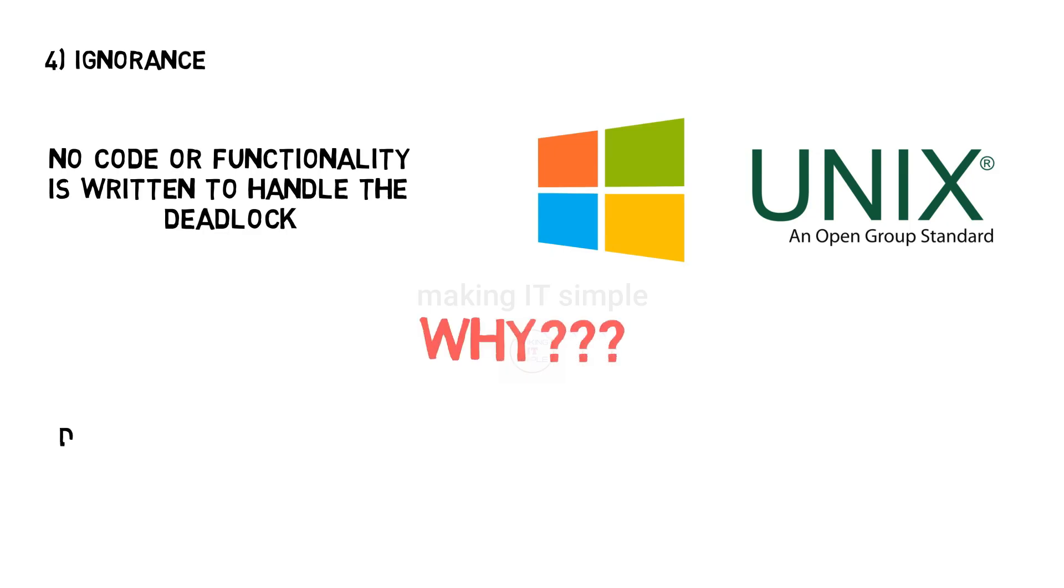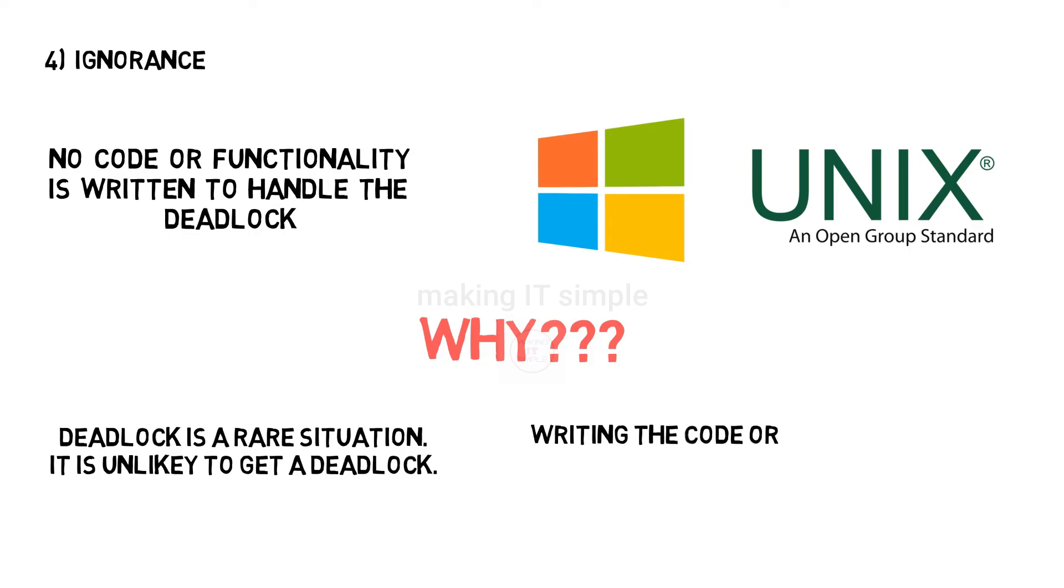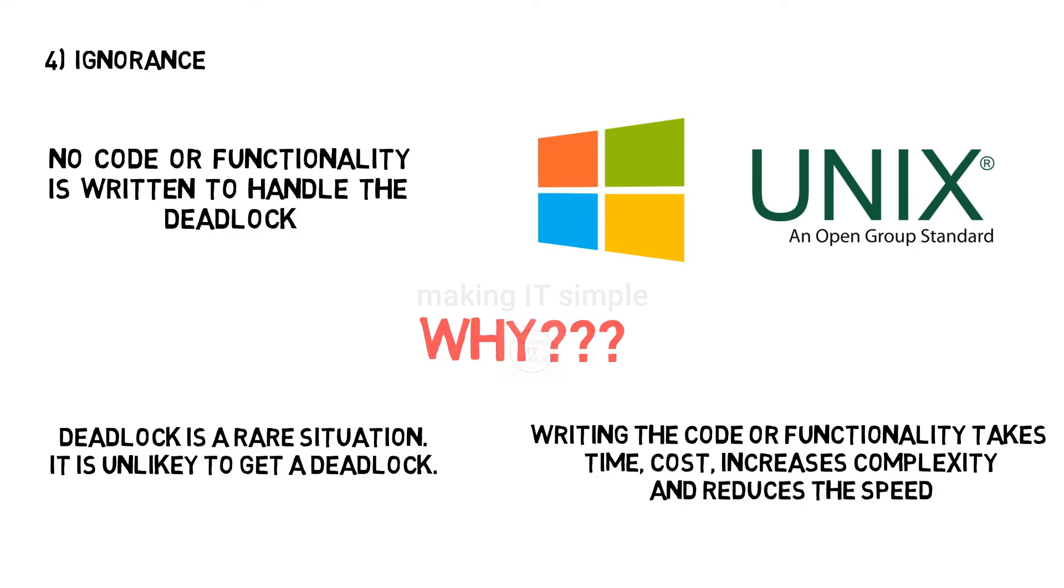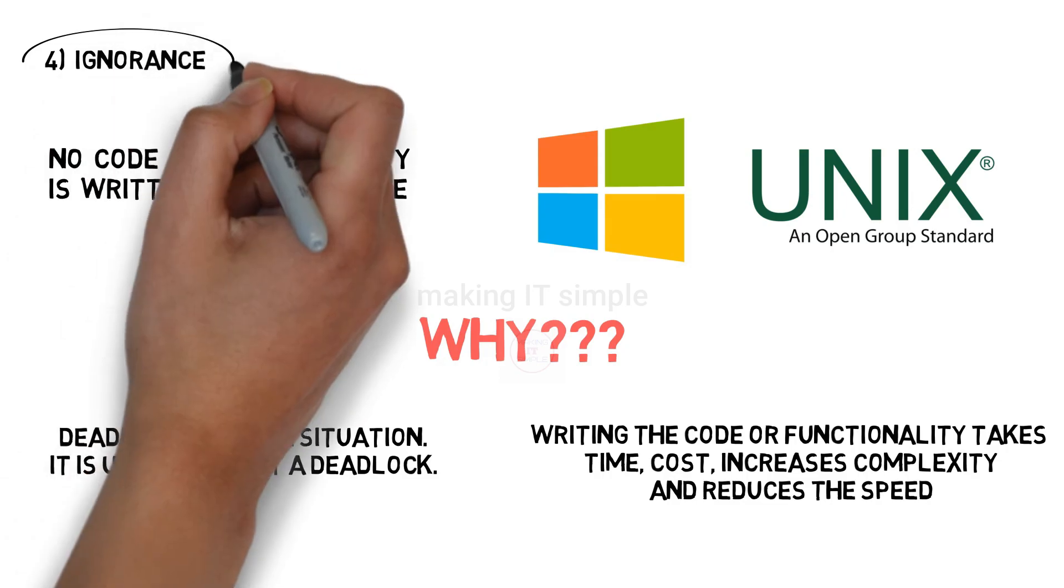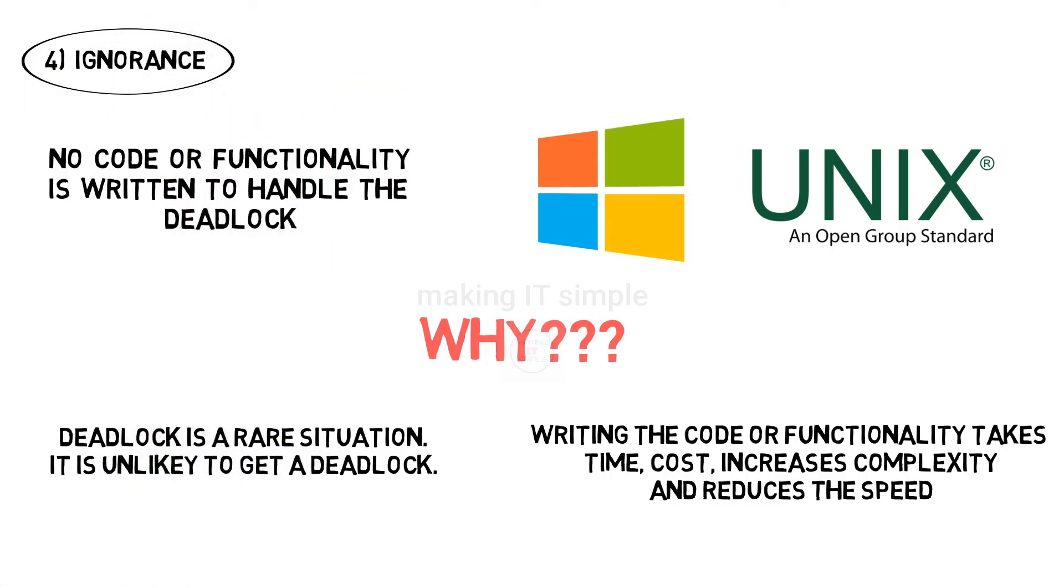Are you wondering why? Deadlock is a very rare situation. It is highly unlikely to happen. So ignorance is considered a better approach. Another thing is that in the previous three approaches we need to write the functionality or code to handle the deadlock. It takes time and cost and also increases complexity and reduces speed. So the ignorance approach is considered better and is used in systems like Windows and Unix.